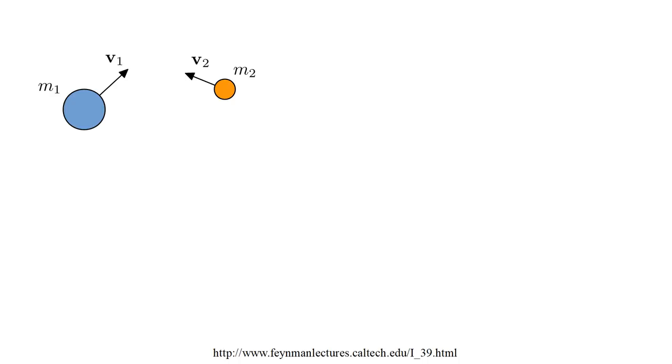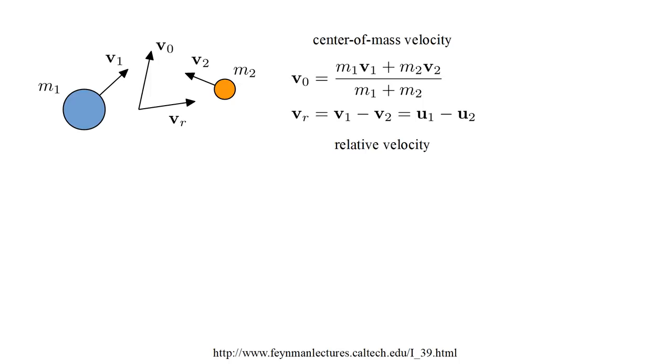Two balls have masses M-1 and M-2, and velocities V-1 and V-2. The center of mass velocity V-0 is the total momentum M-1 V-1 plus M-2 V-2 divided by the total mass M-1 plus M-2.